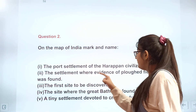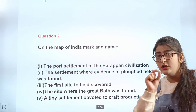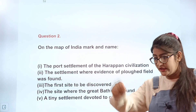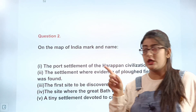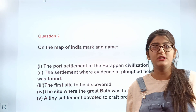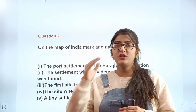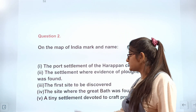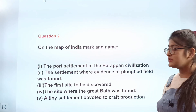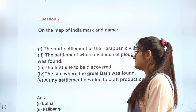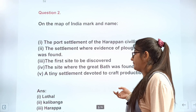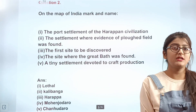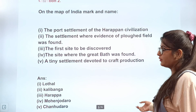Let's see: the port settlement of the Harappan civilization — which was our port settlement? That is Lothal. Your task is to find Lothal on the map. Next: the settlement where evidence of a ploughed field was found — Kalibangan. The first site to be discovered — Harappa. The site where the Great Bath was found — Mohenjo-daro. A tiny settlement devoted to craft production with an area less than 7 hectares.